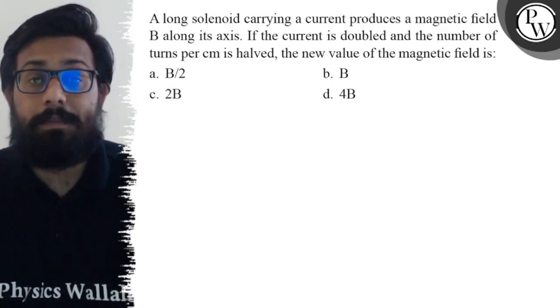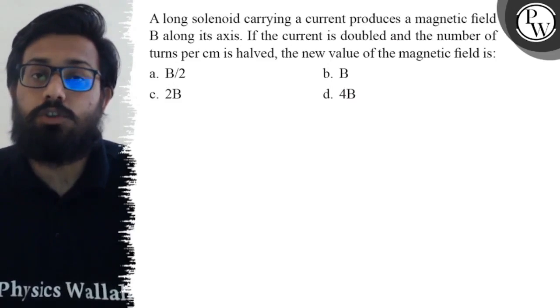Your first option is B/2, the second option is B, your third option is 2B, and your fourth option is 4B.